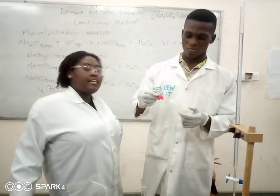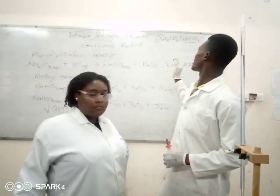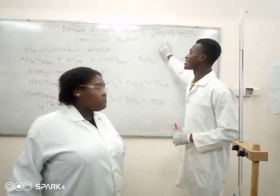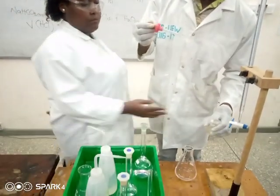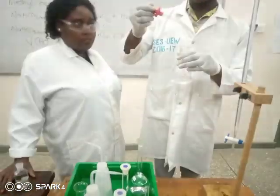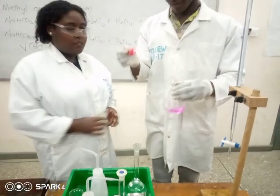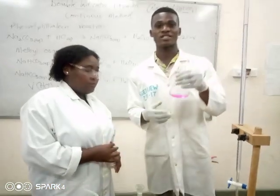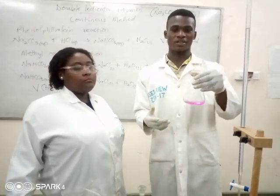Why are we using phenolphthalein as the first indicator? We use phenolphthalein as the first indicator because in our mixture we have sodium carbonate and sodium hydrogen carbonate. The sodium carbonate is more basic, so in any reaction it is the first substance that enables the reaction. I'll put in three drops of phenolphthalein — one, two, three drops. Now there is a color change. The color of phenolphthalein in basic media is pink, and that is what we have here.